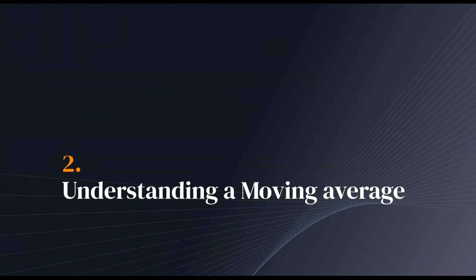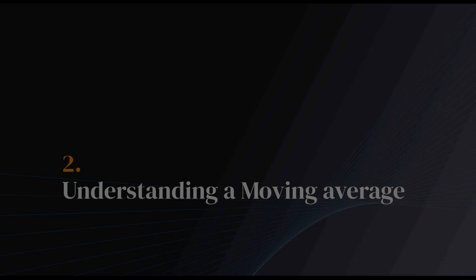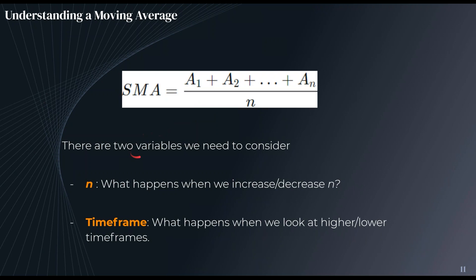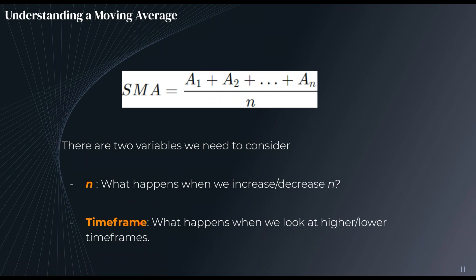Now that we know what a moving average is, let's focus more on understanding it. There are two variables we need to consider. Number one: N, which gives us the number of candle close prices we bring into our calculation. Number two: timeframe. Are the close prices on the 15-minute chart, the one-hour chart, or the one-day chart? These are the variables we can adjust when looking at a moving average.